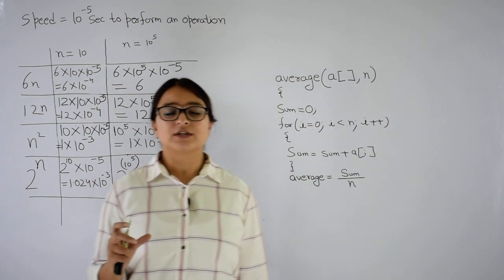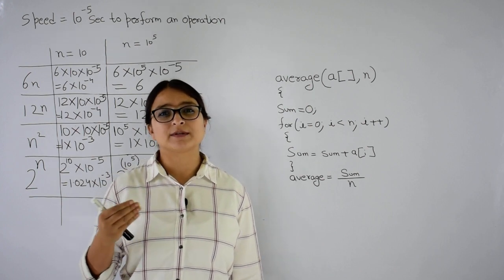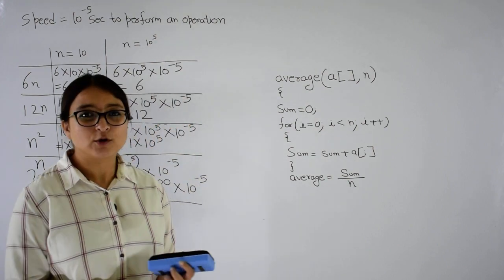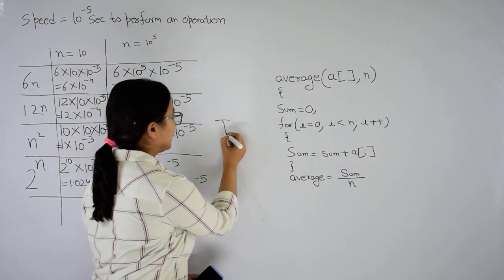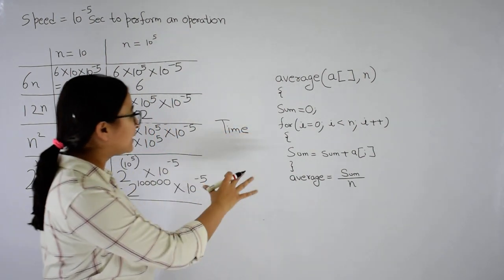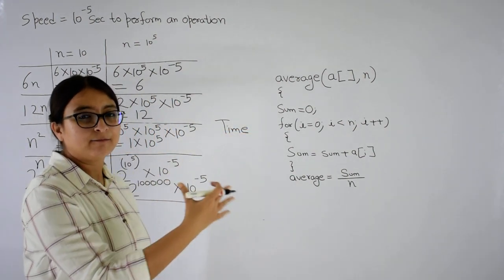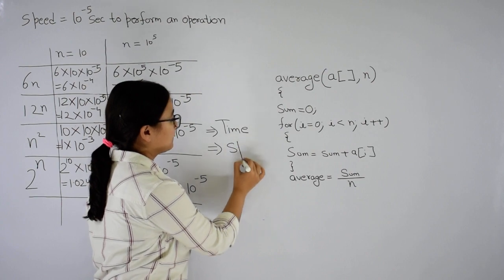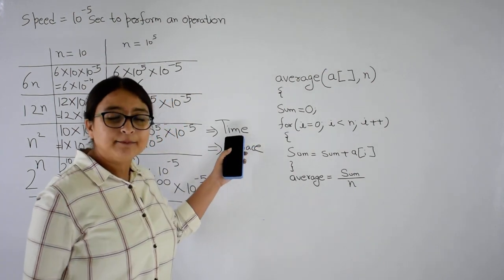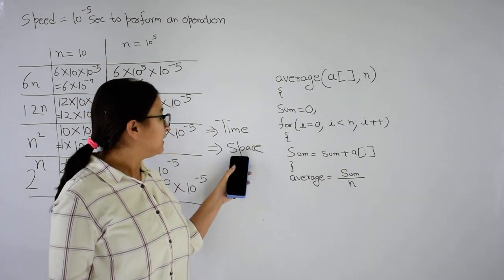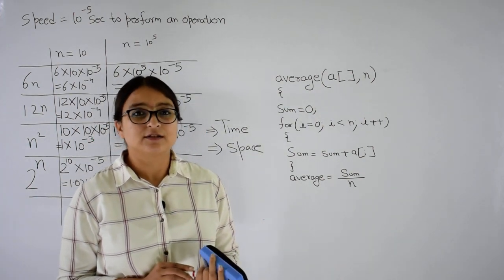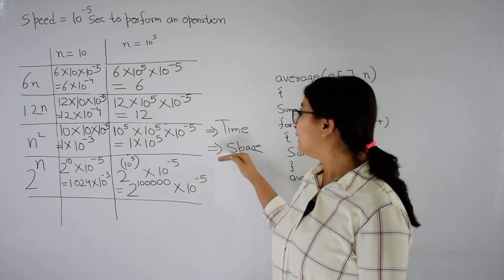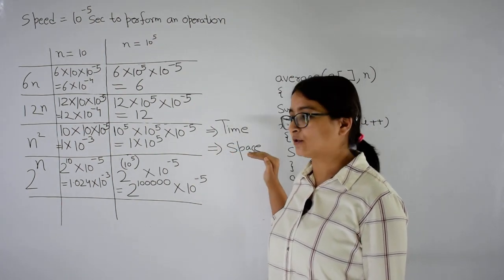In this course, even though there could be many important performance criteria for a computational procedure, the two important ones are: first, time complexity — the run time of an algorithm — and second, space complexity — the space taken by an algorithm. Amongst these two, the one I will focus on for now is time complexity; later in the course we may take up space complexity.